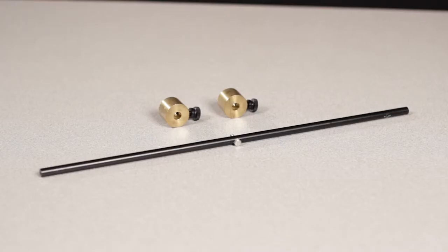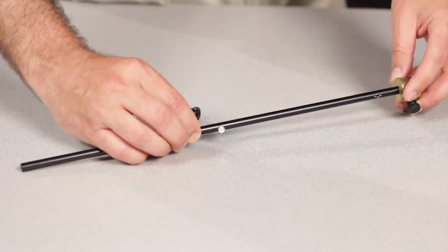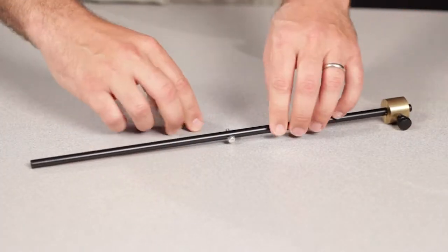Included with the Pendulum accessory is a long thin rod and two brass masses, which can be attached to any point on the rod to act as point masses.